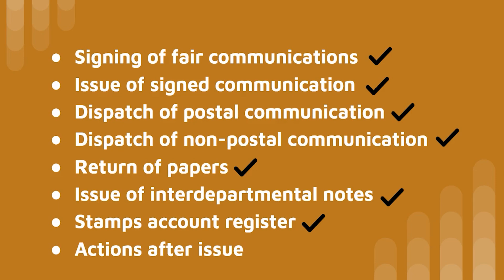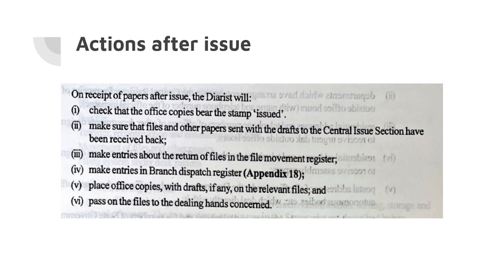Let us finally look at actions after issue. On receipt of papers after issue, the diarist will check that the office copies bear the stamp issued, make sure that files and other papers sent with the drafts to the central issue section have been received back, make entries about the return of files in the file movement register, make entries in the branch dispatch register as given in Appendix 18 of the Manual of Office Procedures, place office copies with drafts, if any, on the relevant files, and pass on the files to the dealing hands concerned.